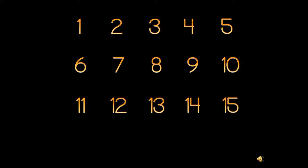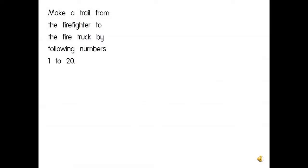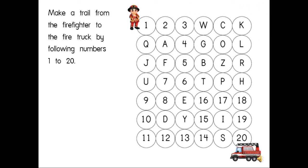Sixteen, seventeen, eighteen, nineteen, twenty. That's great! Now on page one, you are going to make a trail from the firefighter to the fire truck. So you need to color the spaces starting at 1 to 20. You may choose any color that you like.